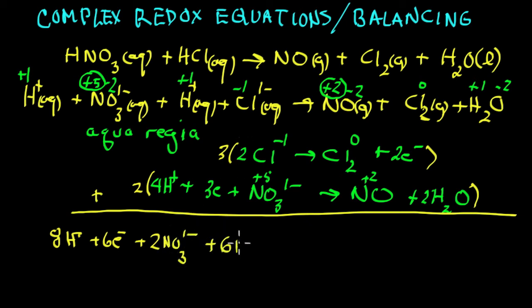Six chloride ions. See, what we're doing is we're just adding them up. On the right side, three diatomic chlorine. There's our six electrons in the right. Eight, two nitrogen monoxide, and two times two for water.